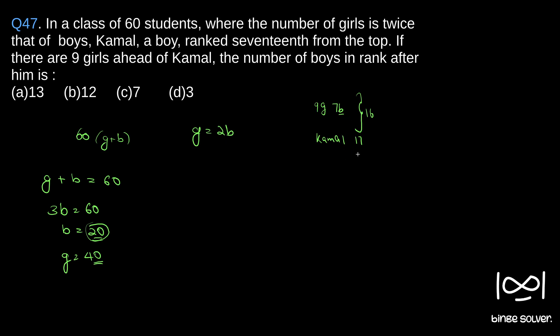7 boys ahead of Kamal plus Kamal equals 8 boys. So total 20 minus 8 is 12 boys after Kamal. Our solution to Question 47 is B, 12.